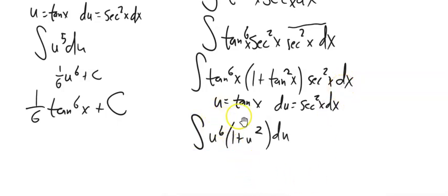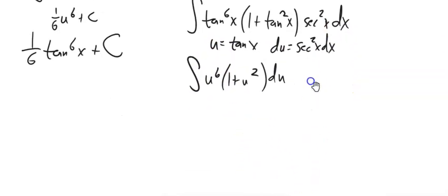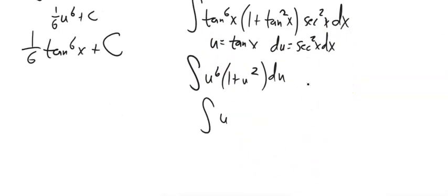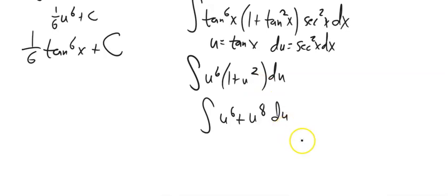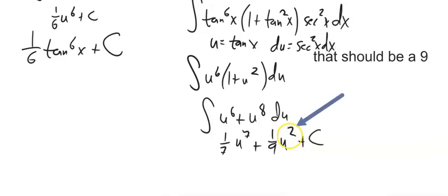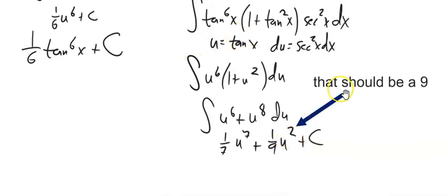Distributing: ∫(u⁶ + u⁸) du = (1/7)u⁷ + (1/9)u⁹ + C = (1/7)tan⁷x + (1/9)tan⁹x + C.